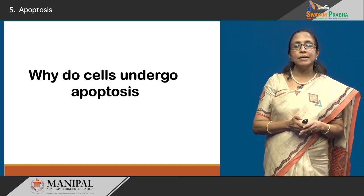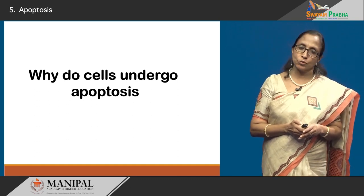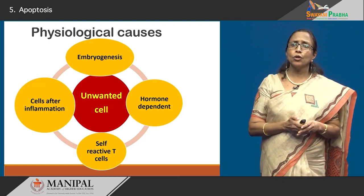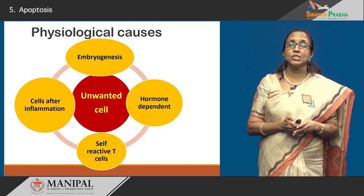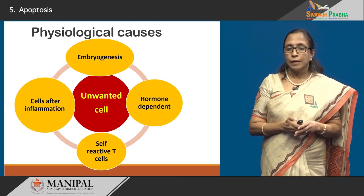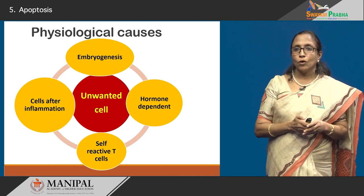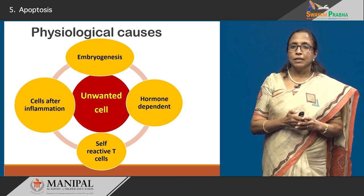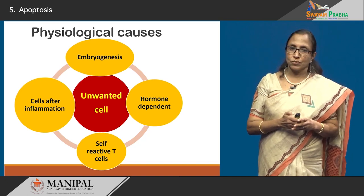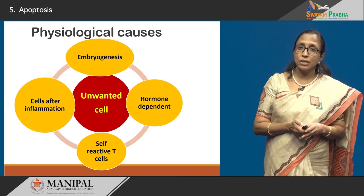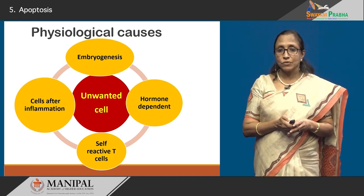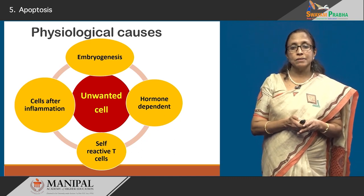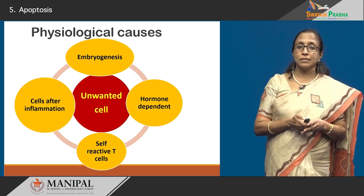Now to see why cells undergo hepatosis. There are many causes where there are cells which are unwanted — unwanted cells, useless cells, or cells which have done their function. They are taken away by hepatosis. It can occur in embryogenesis, in various hormone dependent processes, in cells after inflammation, and also in certain self-reactive T cells.